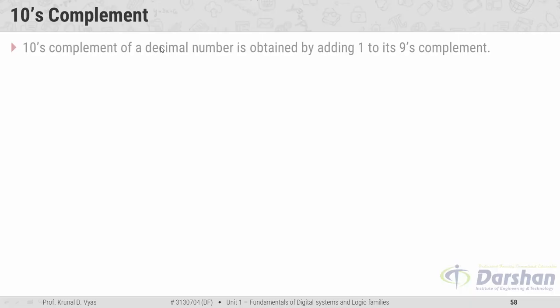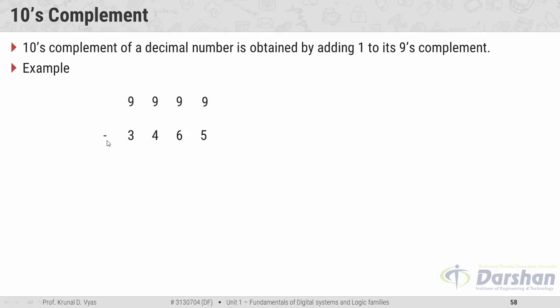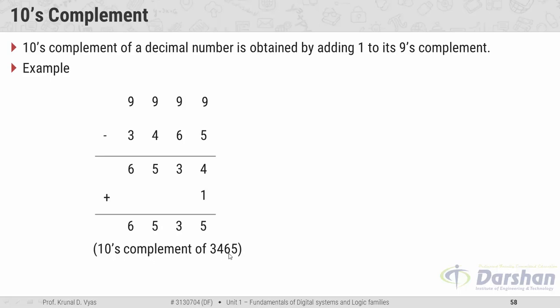For 10's complement — the same as 2's complement in binary — first find the 9's complement, then add 1. The 10's complement of a decimal number is obtained by adding 1 to its 9's complement. For example, the 10's complement of 3465: the 9's complement is 6534, and adding 1 gives 6535. So 6535 is the 10's complement of 3465.